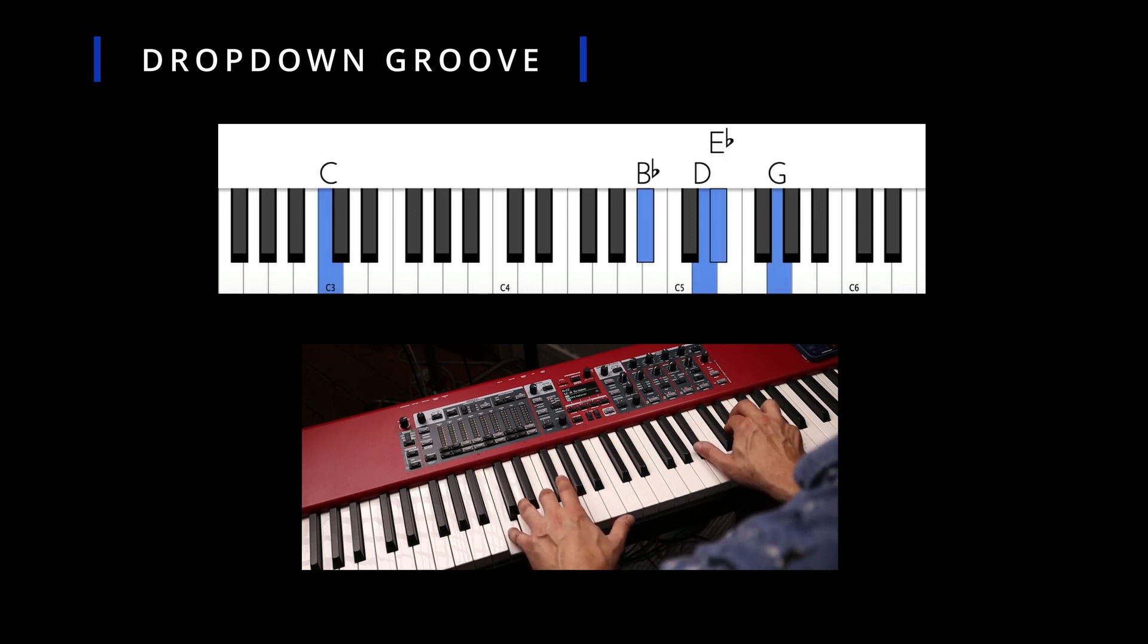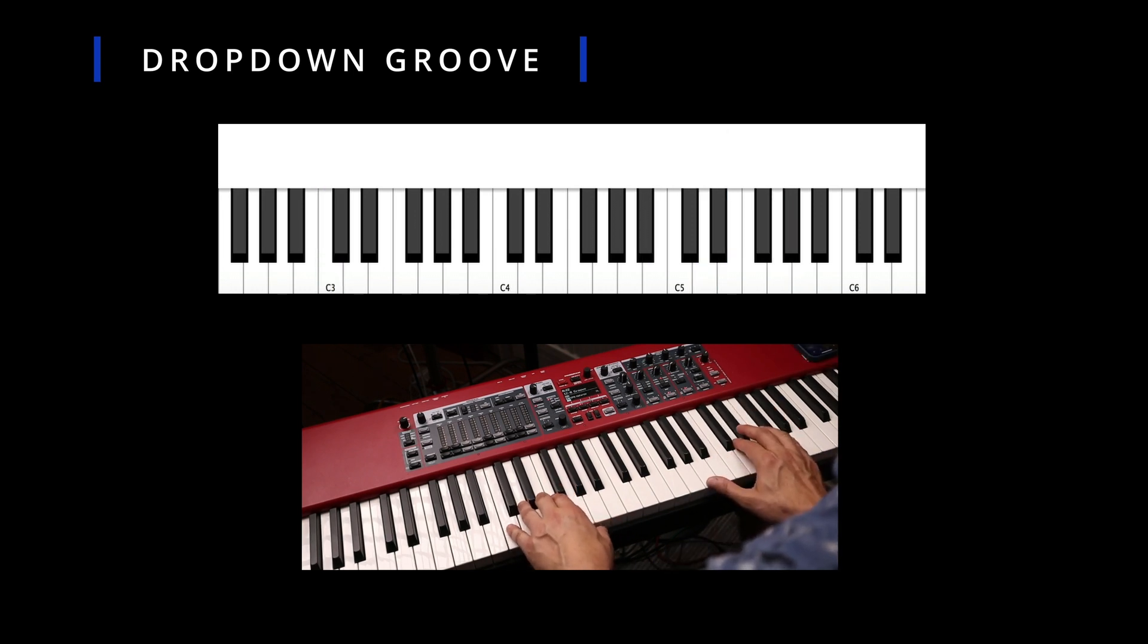We have C minor nine, and then F minor nine with a six added. The nice thing about this chord is that it's easy to play because just the bottom note drops down one. Everything else stays the same. So the basic version is like this.